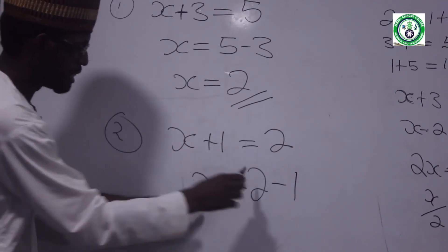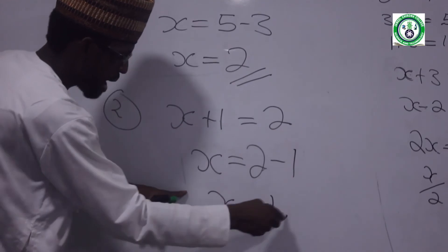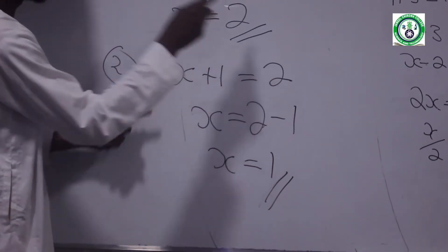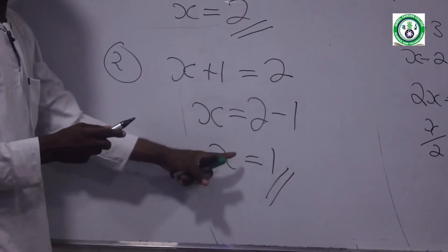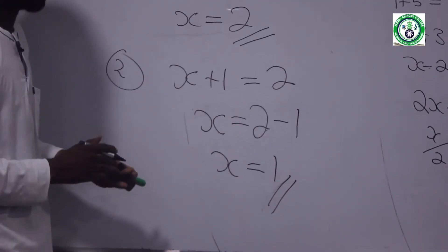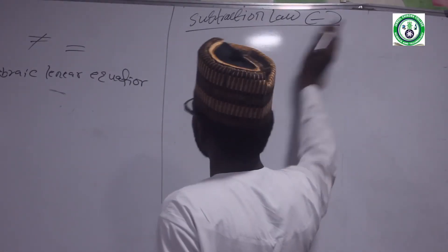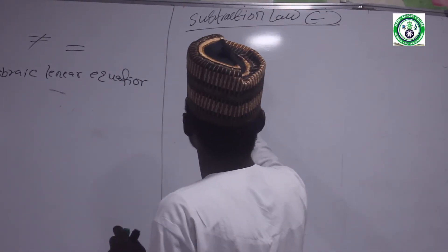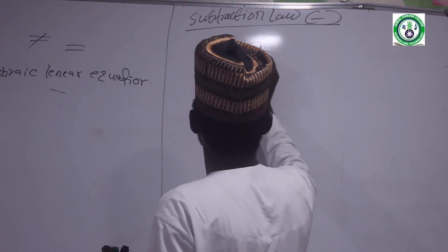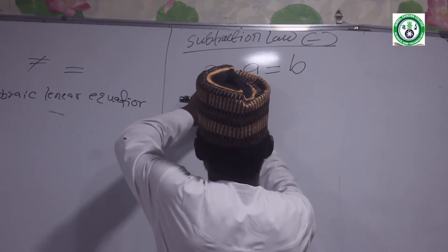X equals 2 minus 1. Check: a certain number — when I add 1, I get 2. That is addition. Now for subtraction: what number, when I subtract from it, gives 5? For subtraction, it works the other way.